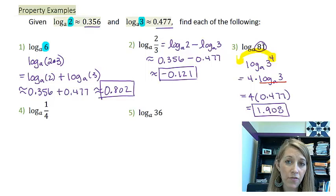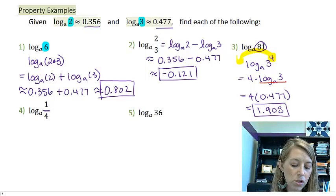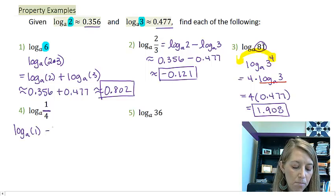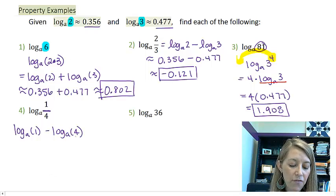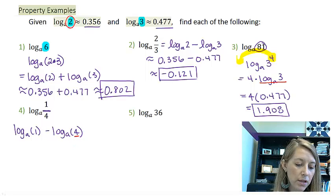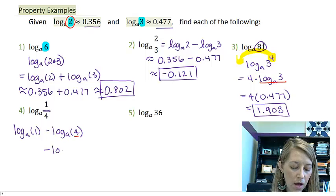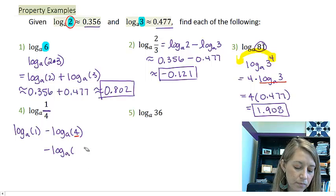Okay, example 4. The very first thing that I'm going to do is I'm going to use my quotient rule. And so this gives me log base A of 1 minus log base A of 4. If I look at 4, I can rewrite that as a base of 2. And so that's going to give me log base A of 1 minus log base A of 2 squared.